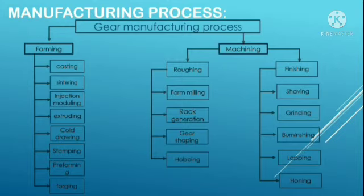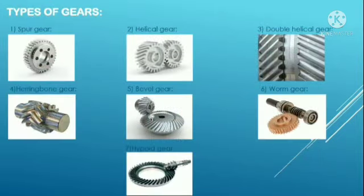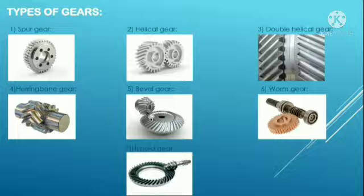While finishing involves processes like shaving and grinding of a gear, burnishing, lapping and honing. There are many types of gears which are used in industries. Some of them are Spur Gear, Helical Gear, Double Helical Gear, Herringbone Gear, Bevel Gear, Worm Gear and Hypoid Gear. These gears are used in various fields from small equipment to large machines as per their need in the industry.